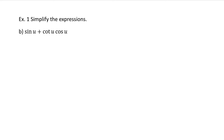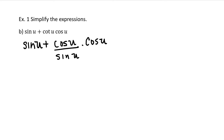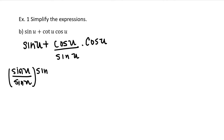Part B: sine u plus cotangent u times cosine u. I'll begin this expression by rewriting cotangent u in terms of sines and cosines. So sine u stays put. I will rewrite cotangent u with its identity cosine u divided by sine u, times cosine u. Now I am going to multiply sine u to get a common denominator. So I will do sine u over sine u times sine u, plus — for the right-hand term — cosine u times cosine u is cosine squared u divided by sine u.